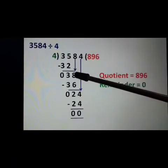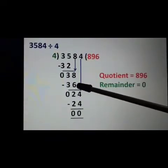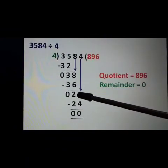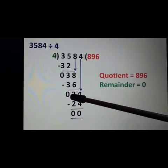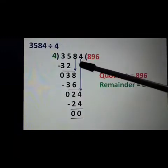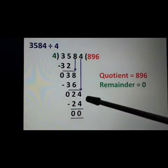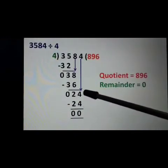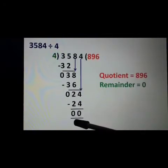Now we will copy down the next digit 8. Our new dividend is 38. 4 nines are 36. Subtract 36 from 38: 8 minus 6 is 2, 3 minus 3 is 0. Our remainder is 2, which is smaller than the divisor 4. Our next number is 4. We will copy it down. Our new dividend is 24. Say the table of 4: 4 sixes are 24.